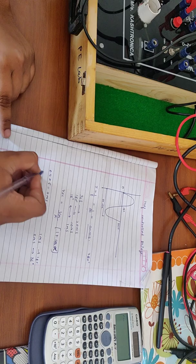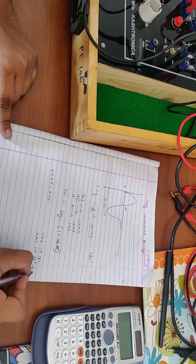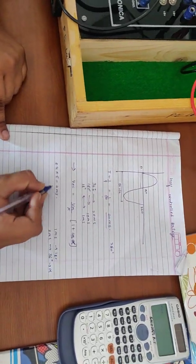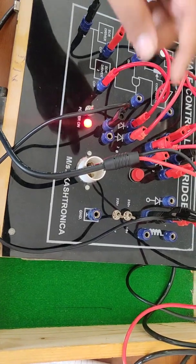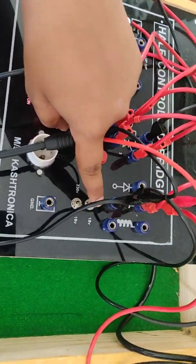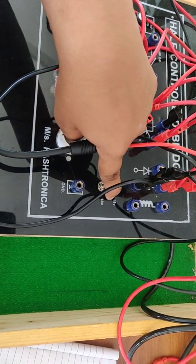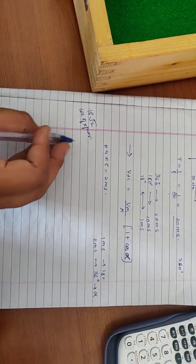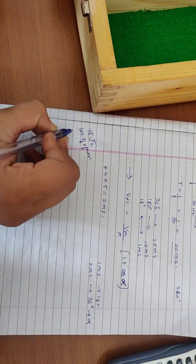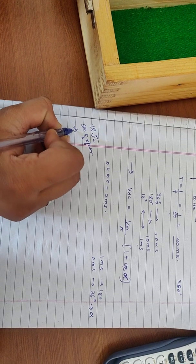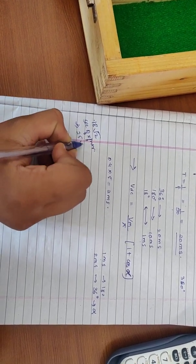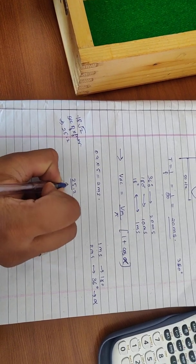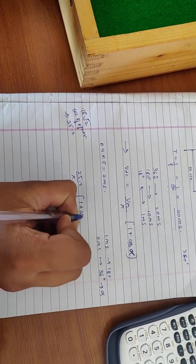Now for putting this value of alpha in the formula above, we have Vm which can be calculated by 18 volts which is the secondary of the transformer into root 2. So Vm is 18 into root 2 which approximately gives us 25.2. Now putting this value, 25.2 upon pi into 1 plus cos of 36.